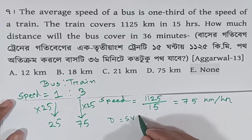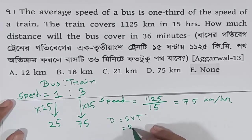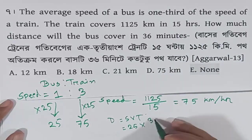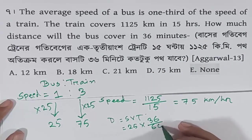Distance equals speed multiplied by time. The speed of the bus is 35 km/h and the time is 36 minutes. We convert 36 minutes to hours, which is 36 divided by 60.